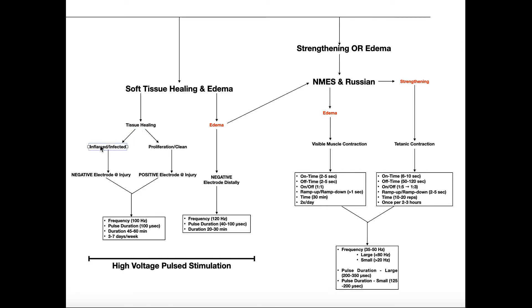Depending on the stage that the wound is in, we put a different electrode at the site of injury. If the tissue that's damaged is in the proliferative phase and is clean, then the positive electrode goes on that spot. So the negative and positive electrode for tissue healing depends on what phase of healing that tissue is in. Regardless, tissue healing has generally the same parameters: the frequency is going to be about 100 hertz, the pulse duration is about 100 microseconds, treatment duration can be anywhere between 45 minutes and an hour, and this can be done three to seven days a week.